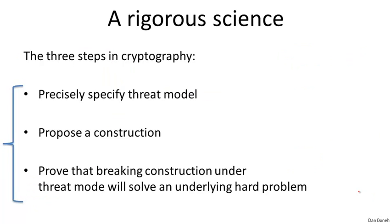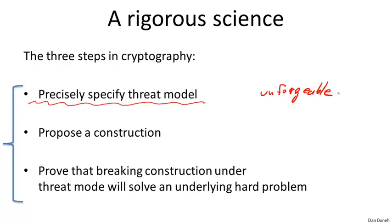Modern cryptography is a very rigorous science. Every concept we describe follows three rigorous steps, which we'll see again and again. First, when we introduce a new primitive like a digital signature, we precisely specify the threat model — what can an attacker do to attack it and what is their goal. For example, we define exactly what it means for a signature to be unforgeable. For every primitive we describe, we precisely define the threat model.